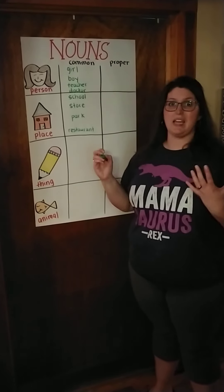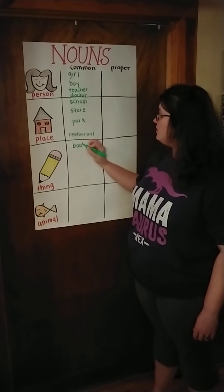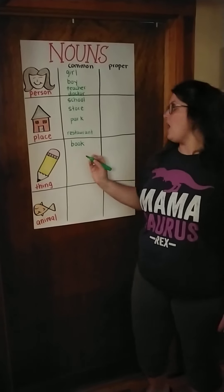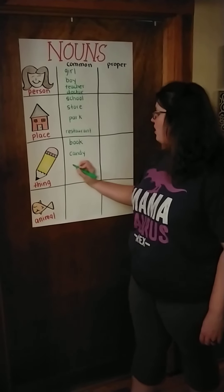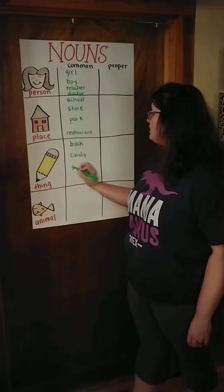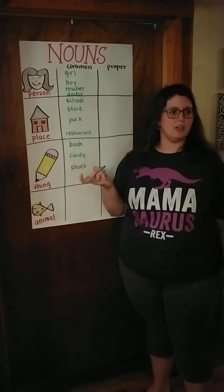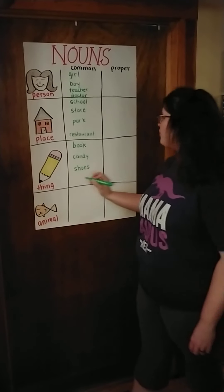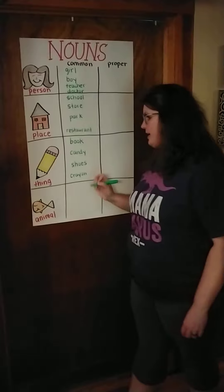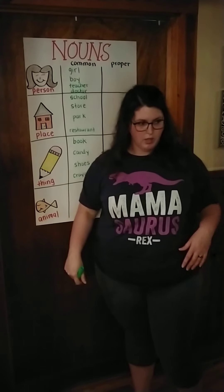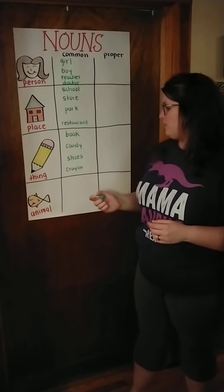Now let's think of some things. A book is a thing. Oh, candy — I love to eat candy. How about my shoes? Shoes are a thing. And let's come up with more — how about crayon? Because we use a crayon. You could do a pencil, anything — your ring, your finger, the wall, a picture, anything — that's a common noun.